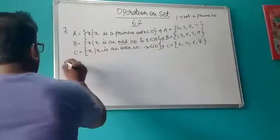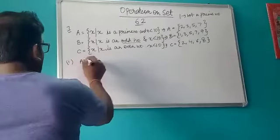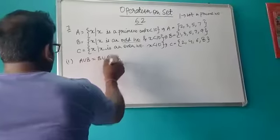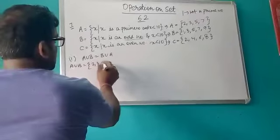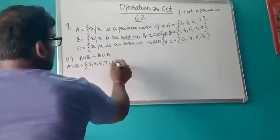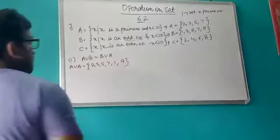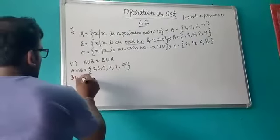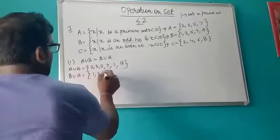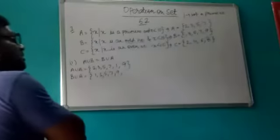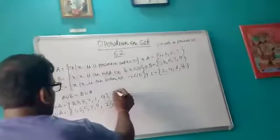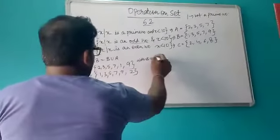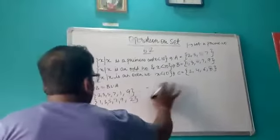Now we solve the first part: prove A union B = B union A. A union B: elements of A are {2, 3, 5, 7}, then elements of B not in A are 1 and 9, giving A union B = {2, 3, 5, 7, 1, 9}. Then B union A: all elements of B, then elements of A not in B. You can see both sets contain the same elements, so A union B = B union A.